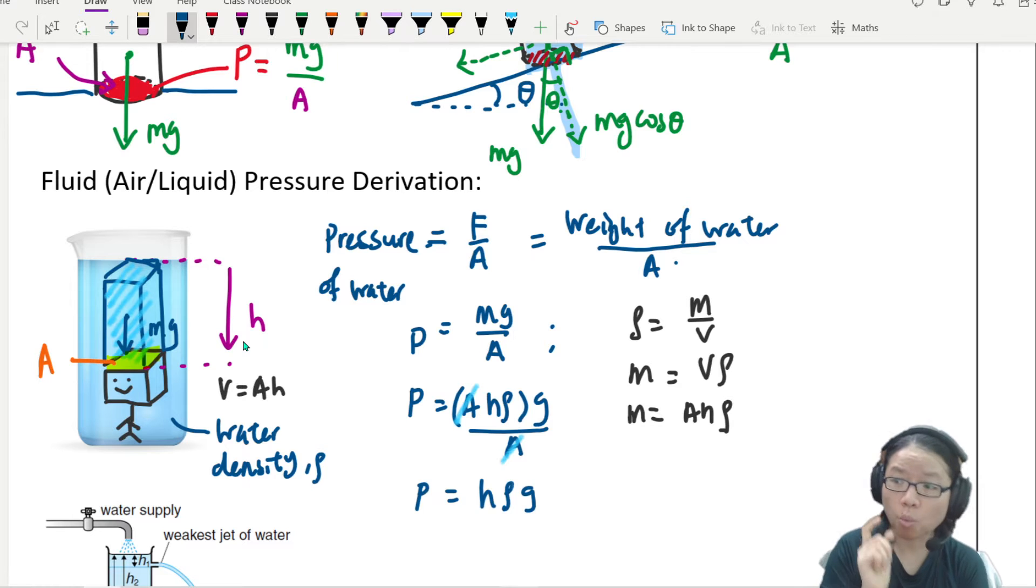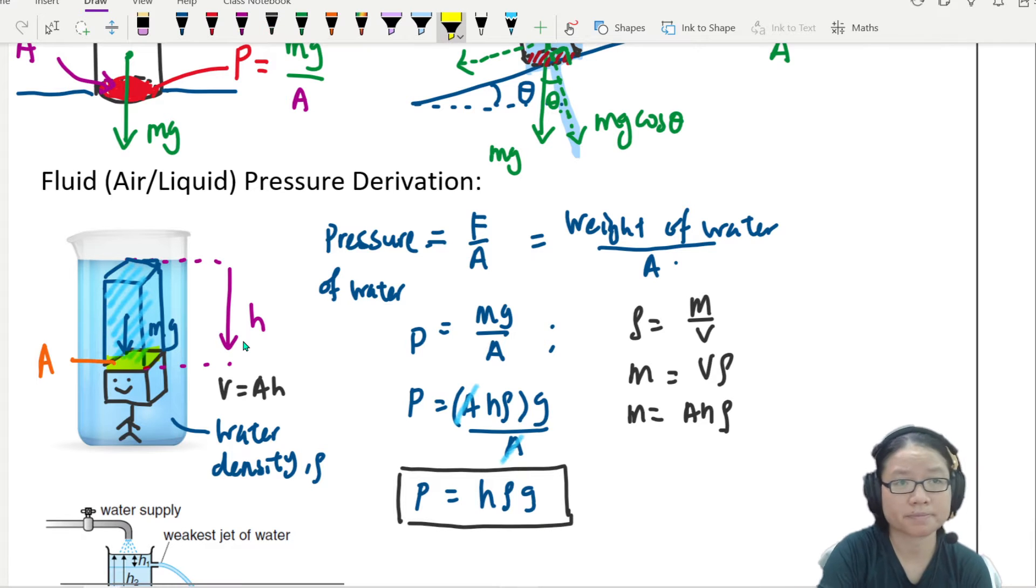So in the end of the day, I will have pressure is equal to AH density times g over A. You see why it's very convenient? Your A and A cancels out. Homies, this means whether my object has large area or small area, it doesn't matter. It does not matter. So we have the pressure only dependent on H, H rho g or rho g H is up to you. But this is water pressure.